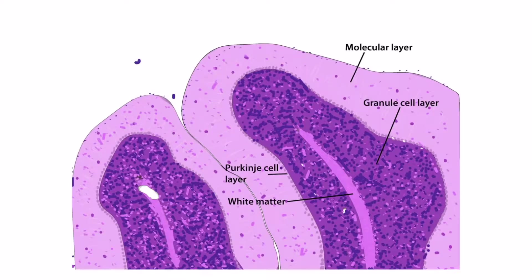This image shows the layers of the cerebellum, which is discussed in the cerebellum section within our neurology physiology chapter. For now, just know that the Purkinje cells form this layer here within the cerebellum.